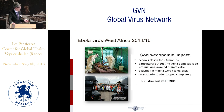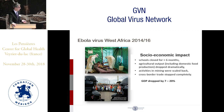This outbreak had enormous economic impact. Schools were closed for more than six months, agricultural output dropped dramatically, mining activities — very important for those three countries — were scaled back, and cross-border trade stopped completely. Altogether, the GDP dropped by 7 to 20%.